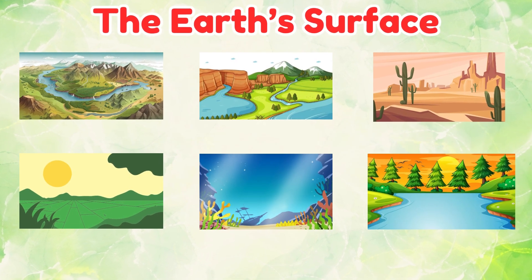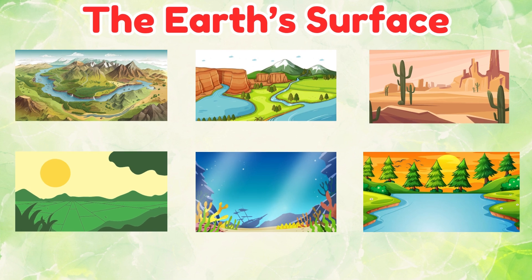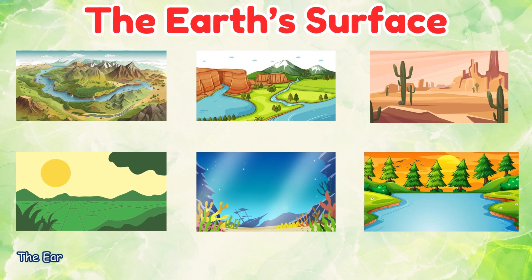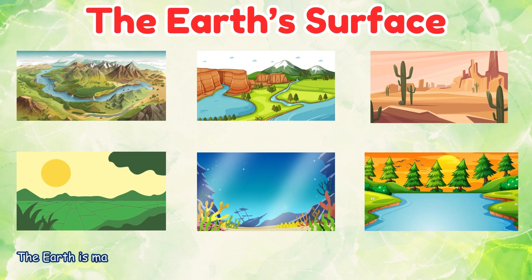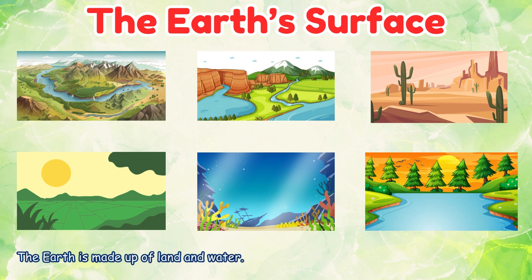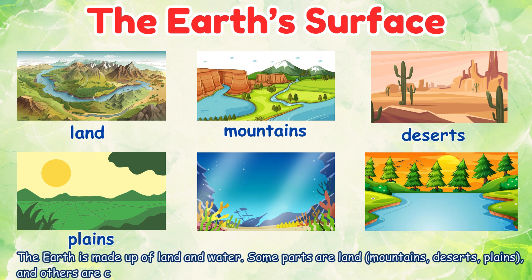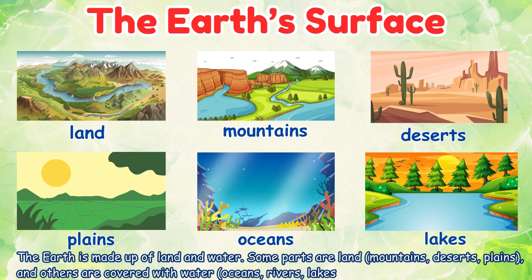The Earth's Surface. The Earth is made up of land and water. Some parts are land — mountains, deserts, plains — and others are covered with water: oceans, rivers, lakes.